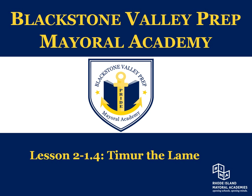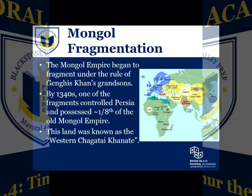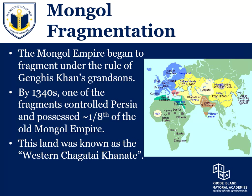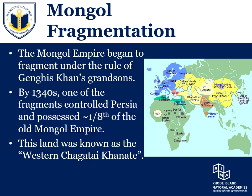He also goes by the name of Timur Lane. Before we get into this conversation, it's important for us to once again revisit this idea of the Mongol fragmentation — the idea that this once large empire is breaking up into smaller components. And by the 1340s AD, one of those fragments, which controlled northern Persia and central Asia, was the Western Chagatai Khanate.